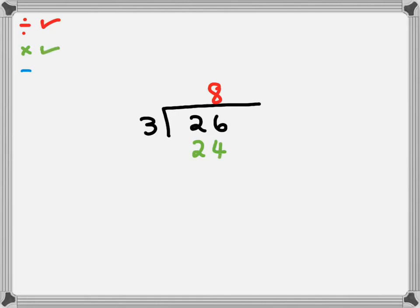Now our minus step, 26 minus 24. Six minus four is two, and two minus two is nothing. So that's our minus step done, and this two is going to be the remainder, remainder two. Very easy. Next one.